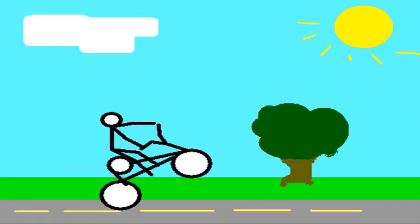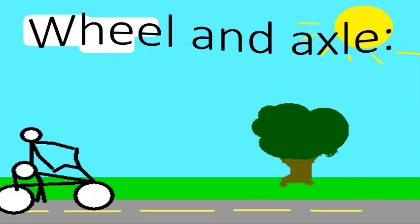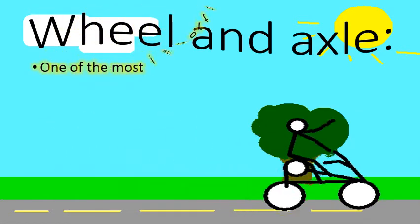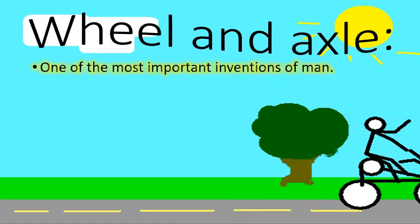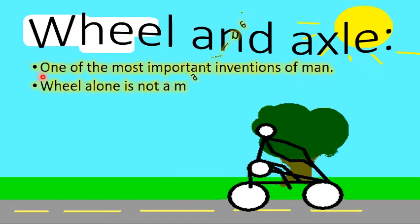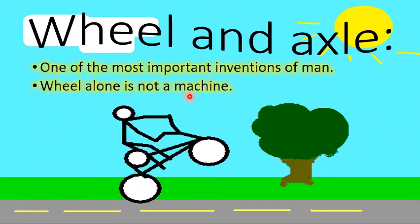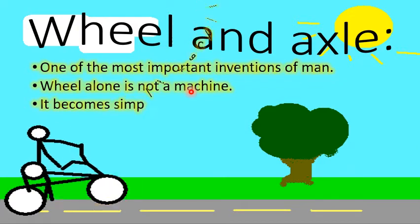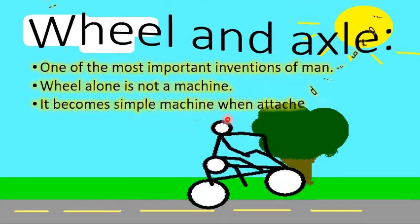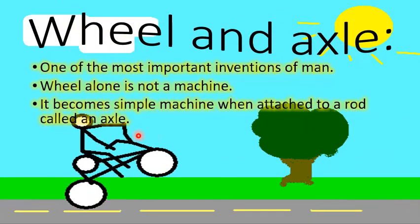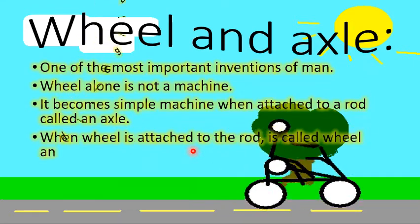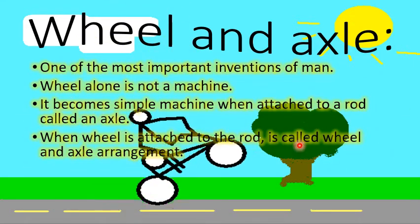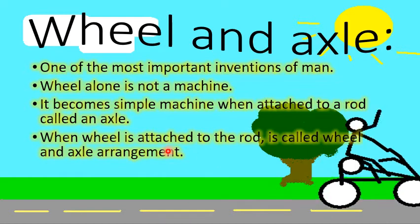Now it is time to learn about one of the most important simple machines, which is wheel and axle. The wheel is one of the most important inventions of mankind. Wheel alone is not a simple machine, but it becomes a simple machine when it is attached to a rod called an axle. When the wheel is attached to this rod called an axle, they both are called the wheel and axle arrangement.